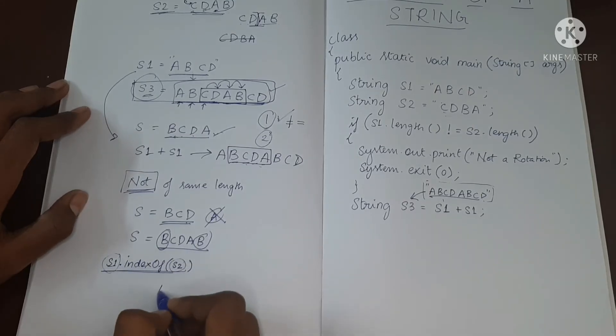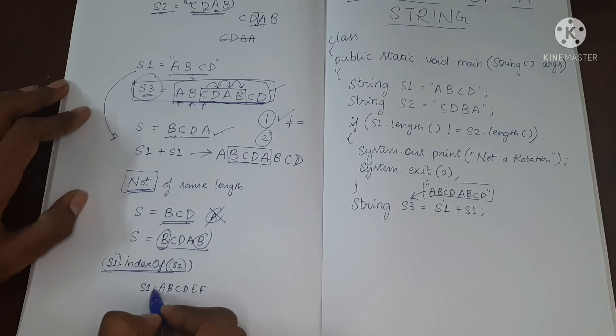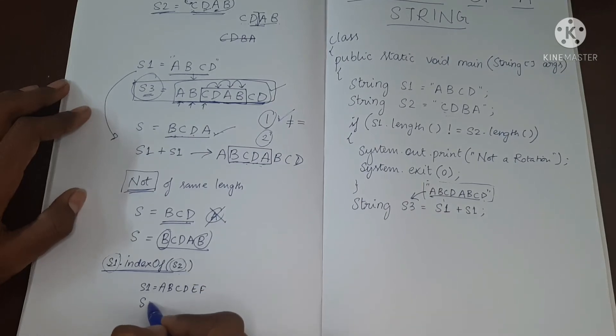Let's say S1 is A, B, C, D, E, F. And let's say S2 is B, C, D. What will be the output of this? Where is B, C, D present? B, C, D is present over here.